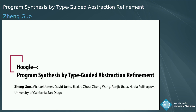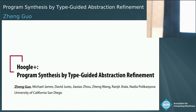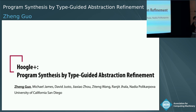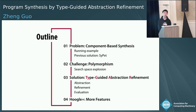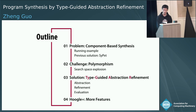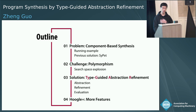Hello everyone. I'm Chen. Today I'm going to present our talk on program synthesis by type-guided abstraction refinement. I will begin the talk by introducing the problem we are solving with an example, and then I will show the challenge when we have polymorphism in them. Next, I will move on to some technical details of our solution, and at last I will cover some more supportive features in our implementation.